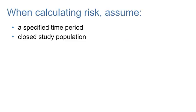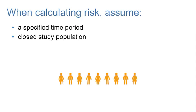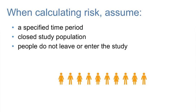When calculating risk, we generally assume that the entire population at risk at the beginning of the study period has been followed to determine who develops the health outcome of interest. A closed study population means no new individuals are entering the study once it has started — no individuals could join halfway through the study, for example. In a closed study population, people do not leave or enter the population due to birth, death, migration, loss to follow-up, etc.